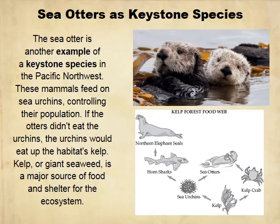Sea otters are another huge keystone species. It starts with kelp, which are the producers, eaten by kelp crabs, which are primary consumers. Sea otters are secondary consumers, and sea urchins are also primary consumers. When you take sea otters out of the picture, the sea urchin population goes up, which means all the kelp gets eaten — and without the kelp, the basis of the food chain, everything falls apart.